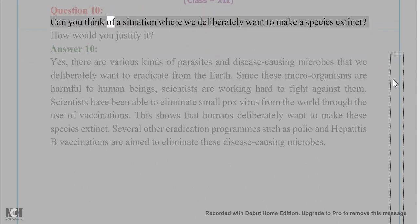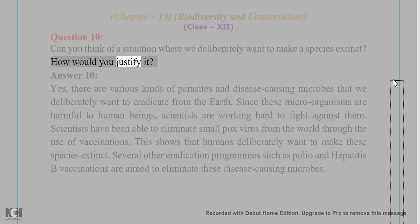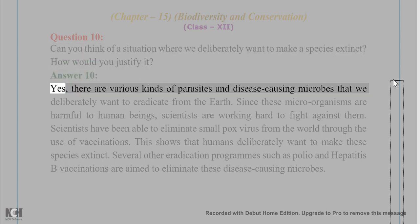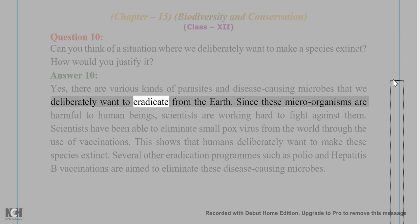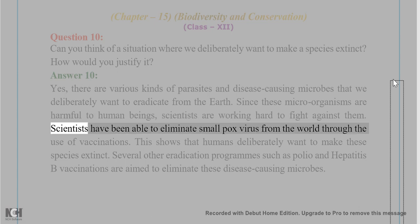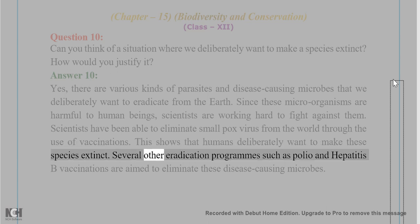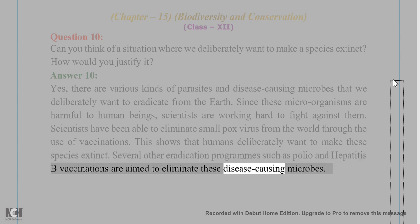Question 10: Can you think of a situation where we deliberately want to make a species extinct? How would you justify it? Answer 10: Yes, there are various kinds of parasites and disease-causing microbes that we deliberately want to eradicate from the earth. Since these microorganisms are harmful to human beings, scientists are working hard to fight against them. Scientists have been able to eliminate the smallpox virus from the world through the use of vaccinations. Several other eradication programs such as polio and hepatitis B vaccinations are aimed to eliminate these disease-causing microbes.